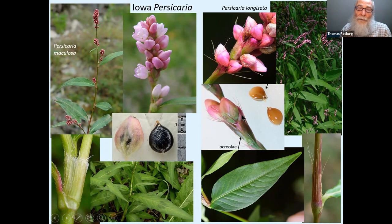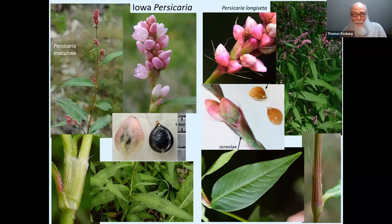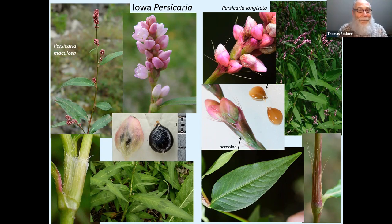The bristle length on the ochreoli also separates longiseta from hydropiperoides — hydropiperoides bristles aren't quite as long as longiseta's but are longer than maculosa's. That covers all 12 Persicaria species. Most of these bloom towards the end of the growing season, so for floristic inventories you need to survey in August and into September to have fruits. Early in June and July it's really hard to tell which species you've got.